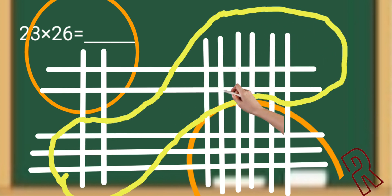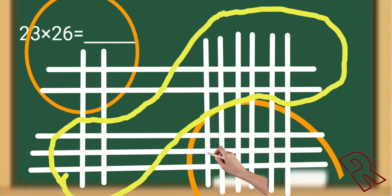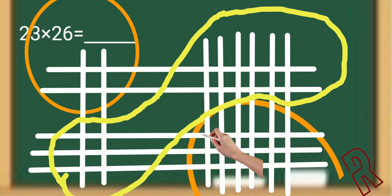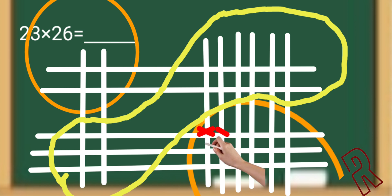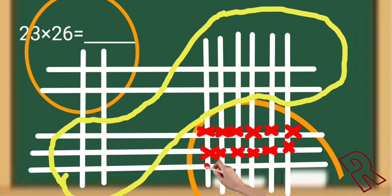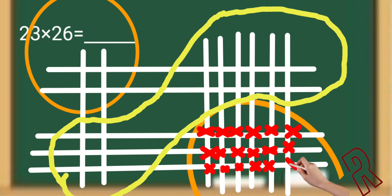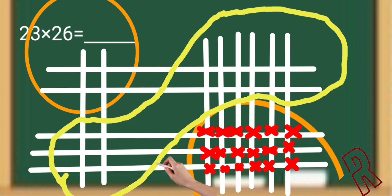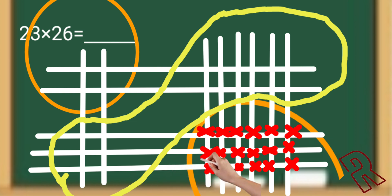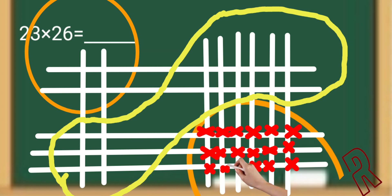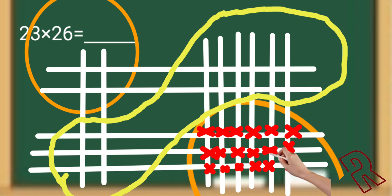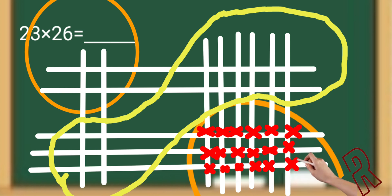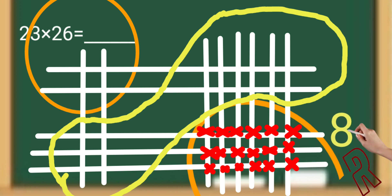Count the intersecting points from the bottom section upward. The last section gives: 1, 2, 3, 4, 5, 6, 7, 8, 9, 10, 11, 12, 13, 14, 15, 16, 17, 18 — that's 18. Keep in mind: whenever we write the result we can only write a single digit in each section. So we write 8 here and carry 1 to the next (middle) section.